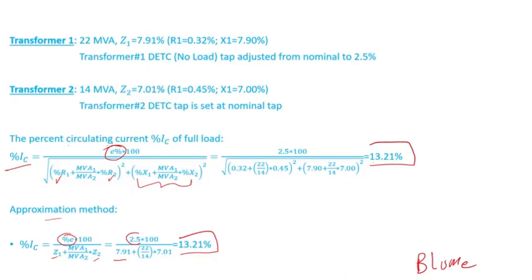In a previous video I talked about when you have the same ratio but different MVA or different impedance. Unequal turns ratios just aggravates the overload situation, so it's very critical to check that anytime you want to parallel transformers.